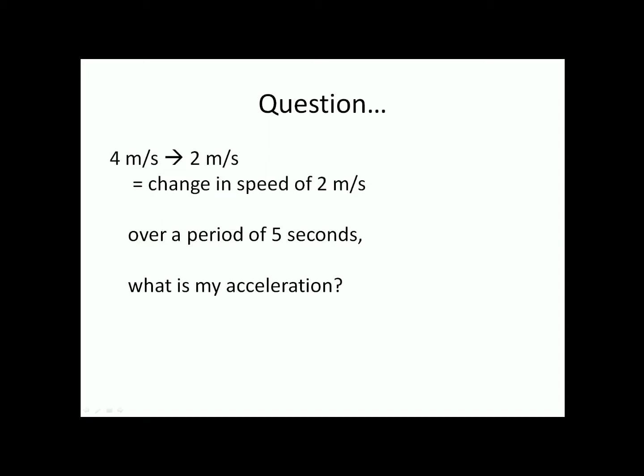So you change your speed from 4 meters per second to 2 meters per second. Which is 4 minus 2. A change in speed of 2 meters per second. Now let's look at the second part over here, which is the period of 5 seconds. I can bring this over here to the top. So it's a change in speed of 2 meters per second over 5 seconds.